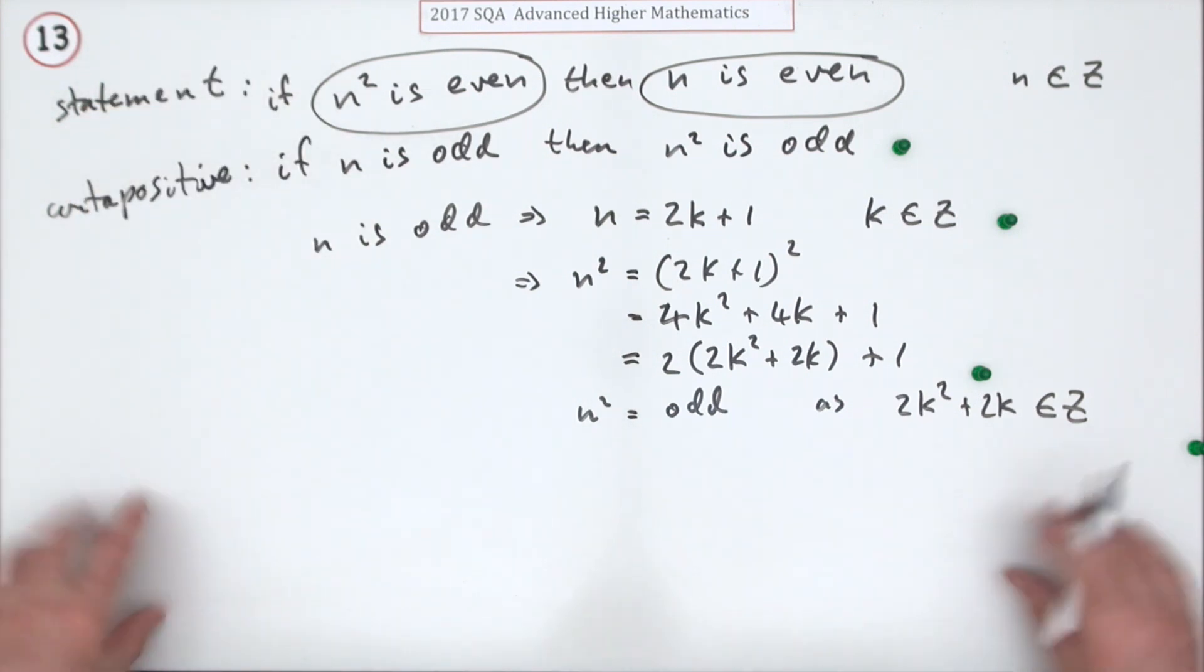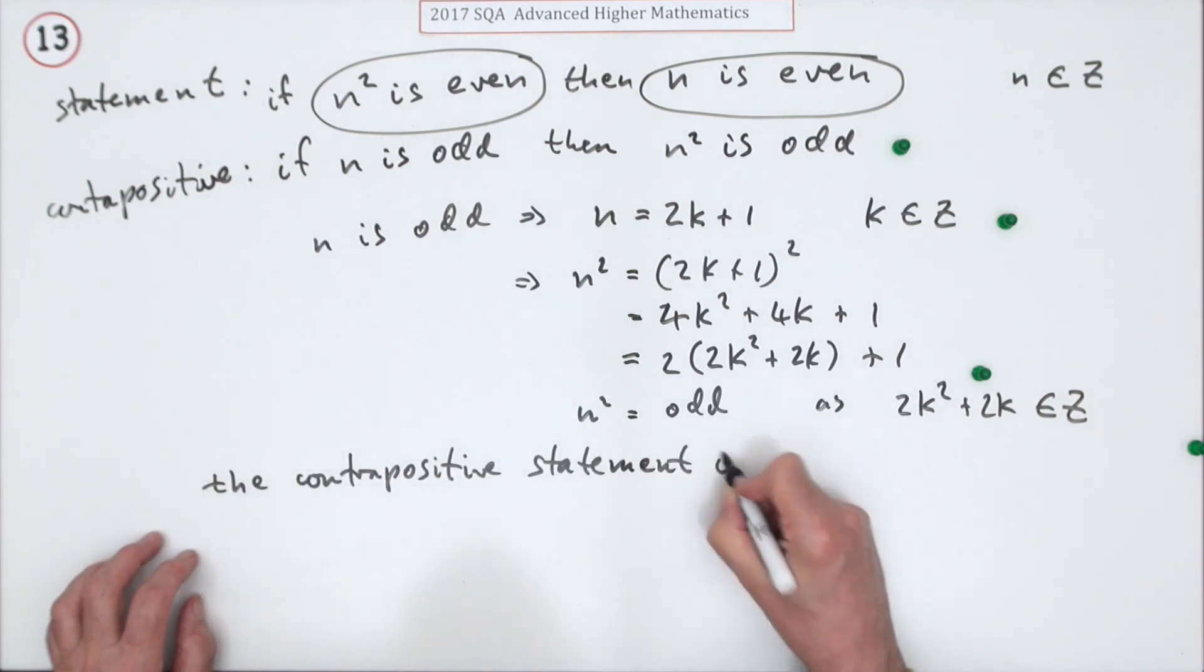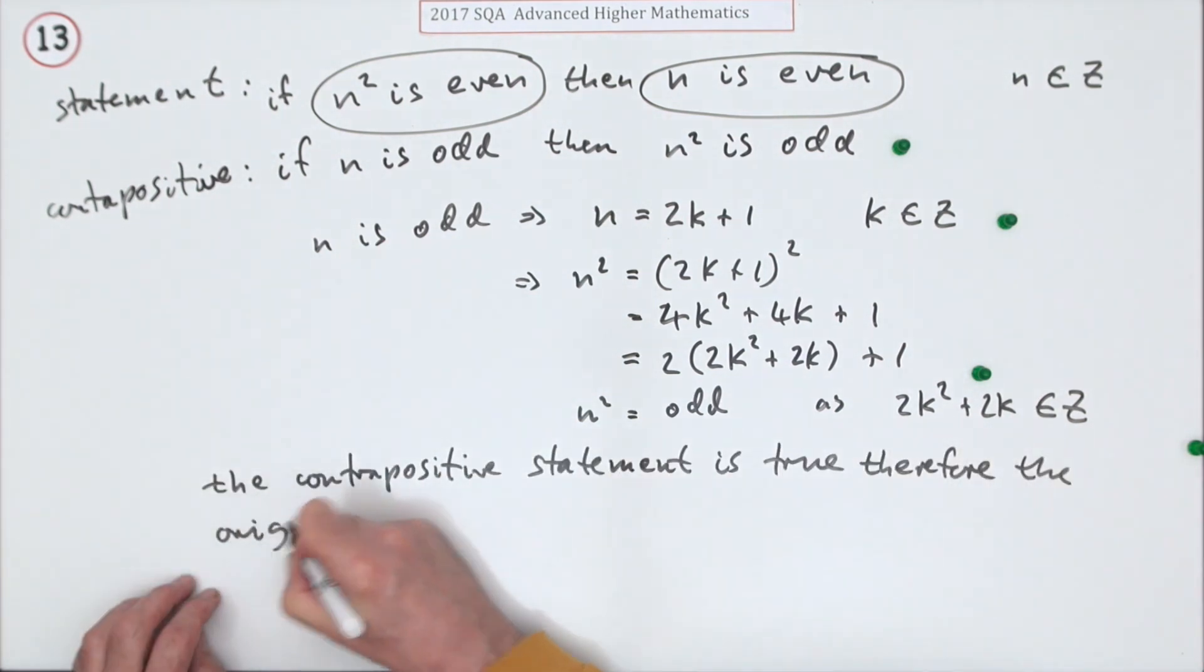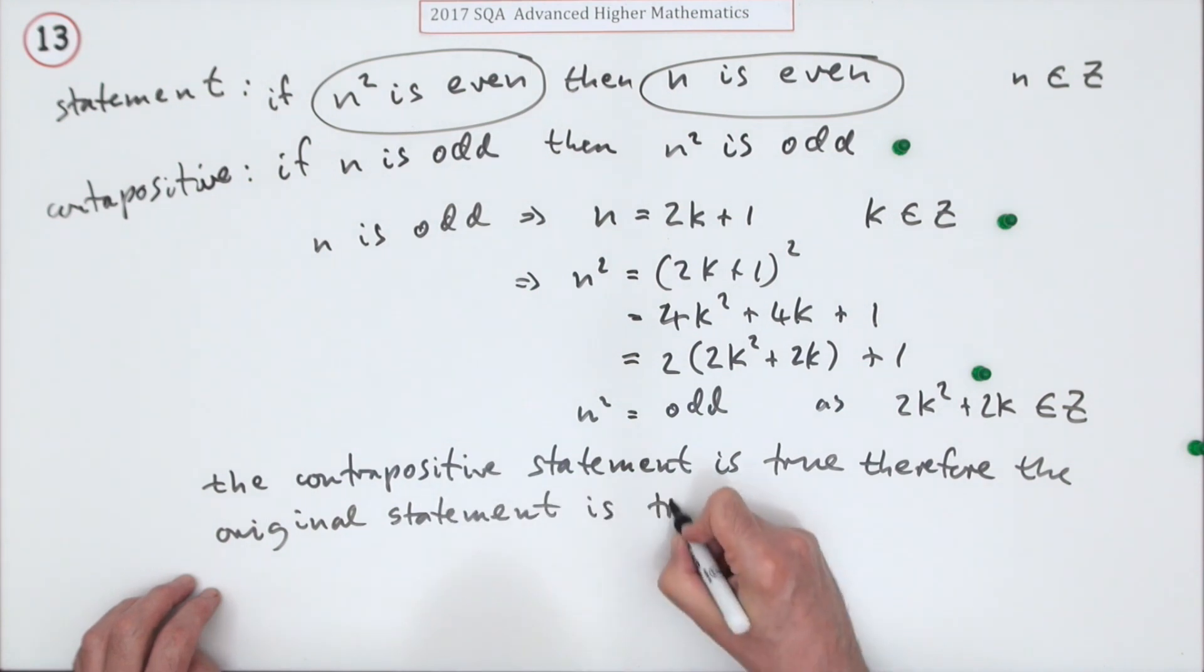So you just have to write all that down. The contrapositive statement is true. Therefore, the original statement is true. There we go. Last mark.